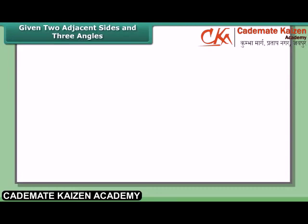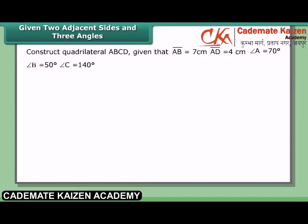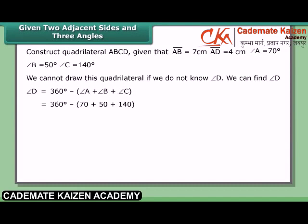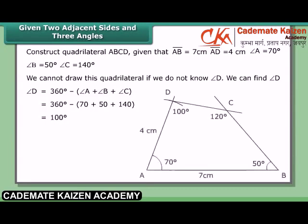Given two adjacent sides and three angles, construct quadrilateral ABCD where AB = 7 cm, AD = 4 cm, angle A = 70°, angle B = 50°, and angle C = 140°. We cannot draw this quadrilateral without knowing angle D. We can find angle D: angle D = 360° − (angle A + angle B + angle C) = 360° − (70° + 50° + 140°) = 100°.